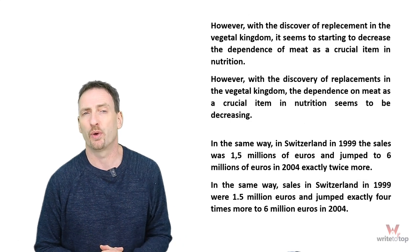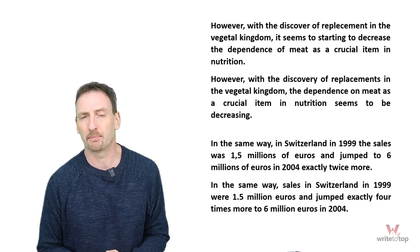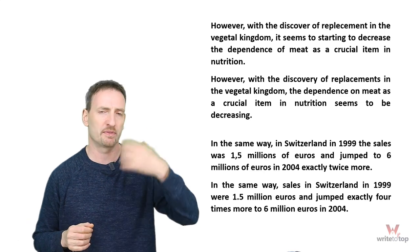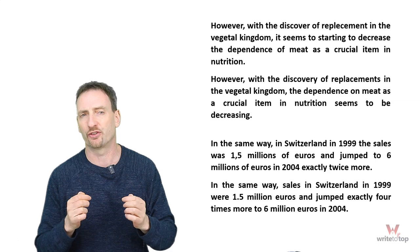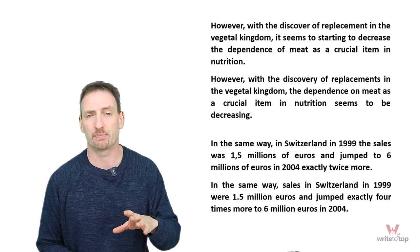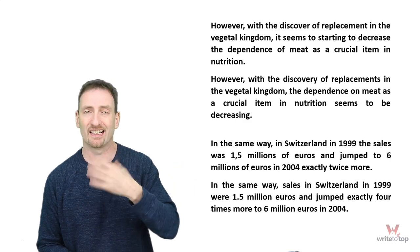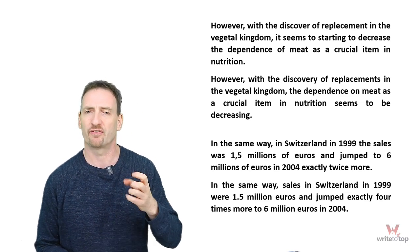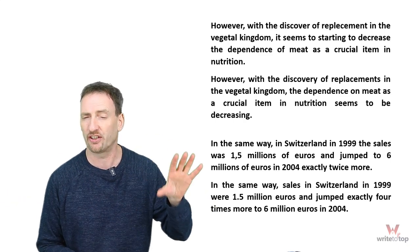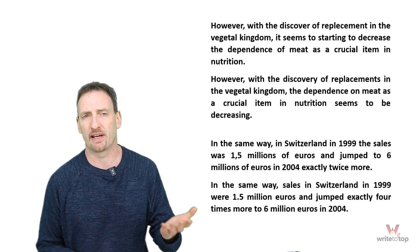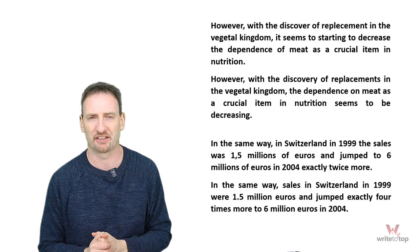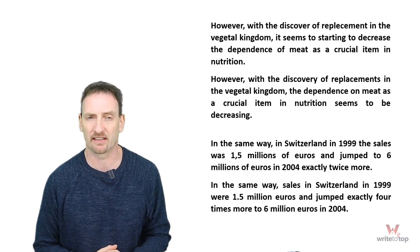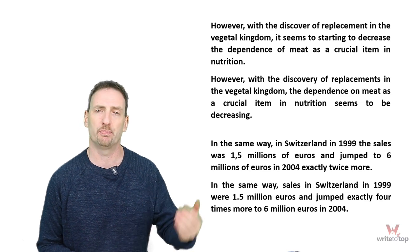Let's look at some examples. 'However, with the discover of replacement in the vegetal kingdom, it seems to starting to decrease the dependence of meat as a crucial item in nutrition.' There are syntax problems, verb problems, and pronoun problems. 'Discover' should be 'discovery' — a noun, not a verb. 'It seems to starting' is incorrect, and 'it' is unclear — that's also a cohesion problem. Fixed: 'However, with the discovery of replacements in the vegetal kingdom, the dependence on meat as a crucial item in nutrition seems to be decreasing.' How you arrange your words has a lot of impact on the message.